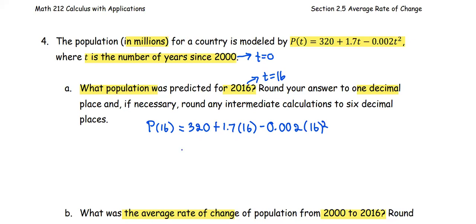We should get the value 346.688 and so forth. But the problem is to round your answer to one decimal place, so the answer is going to be 346.7, and the unit is in millions.